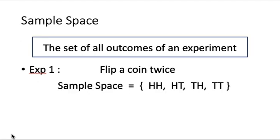And what is sample space? Sample space is merely the set of all outcomes of an experiment. So let us recall our first experiment is to flip a coin two times. In this case, the sample space is: we could have head then head, or head then tail, or tail then head, or tail then tail — so both flips are tails.